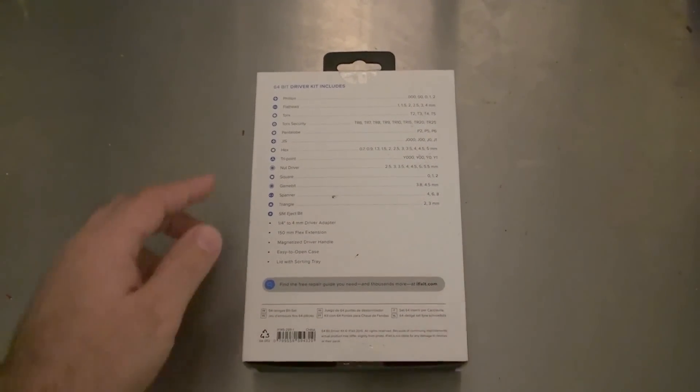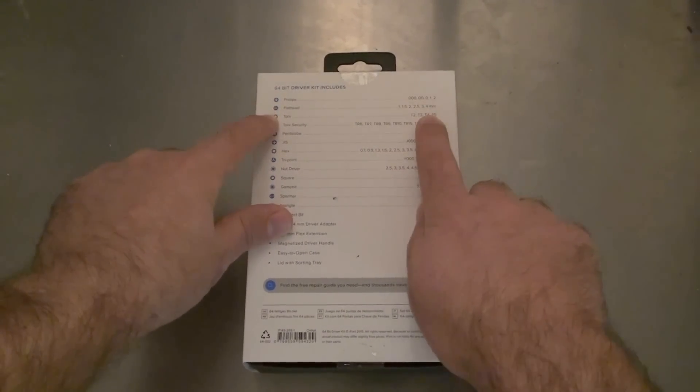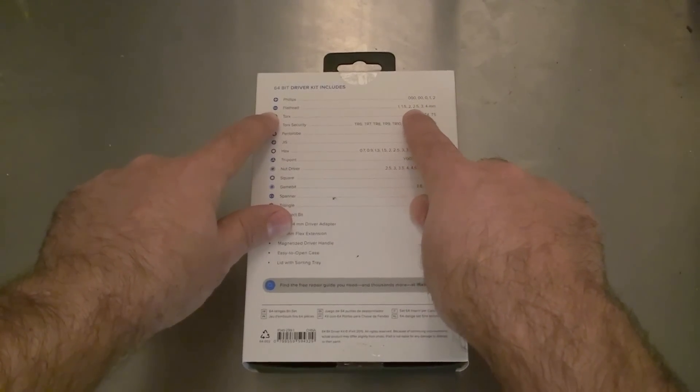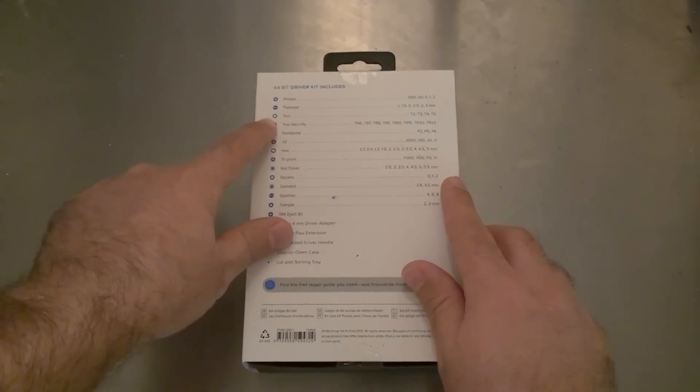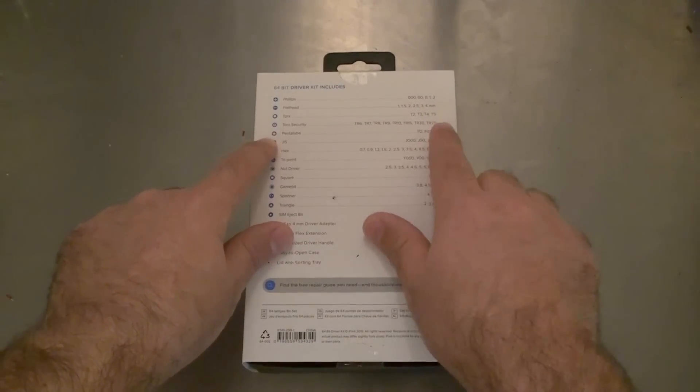I'm just going to walk you around the box here. On the back, it tells you exactly what's inside. The 64-bit kit includes Philips, there's five of those. Flathead, there's a number of those as well, five. It looks like Torx, there's four of those. Torx Security, there's a multitude of those.